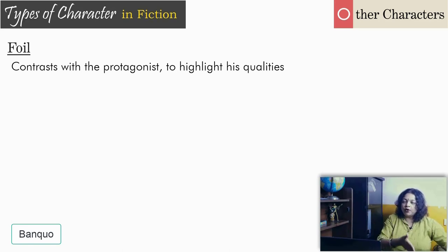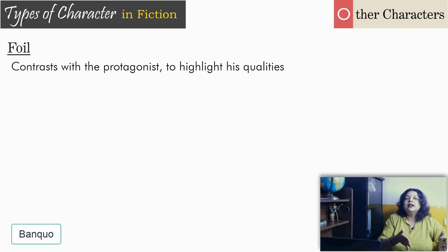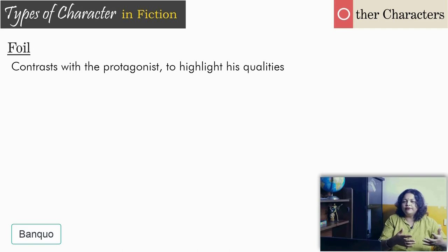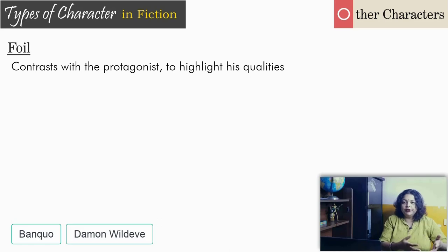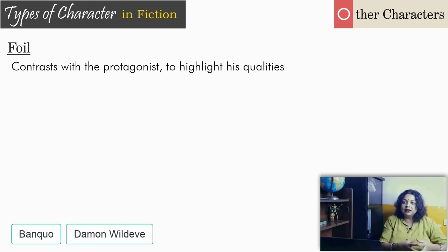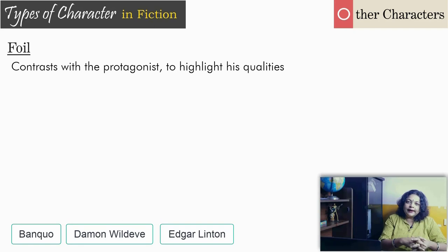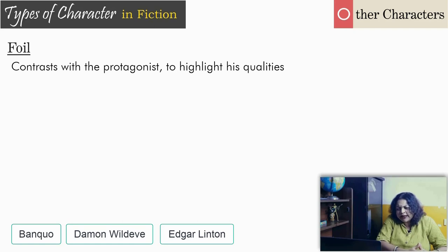Sometimes the foil character is a better human being than the main character; sometimes a worse one — it doesn't always have to be better. For example, Damon Wildeve in Return of the Native is a foil to Clym Yeobright — he has certain parallels with Clym but is a completely different person when it comes to making choices in life. Again, we have Heathcliff and Edgar Linton in Wuthering Heights, where Edgar Linton is a weaker version of Heathcliff. A foil is always a secondary character, not the primary one.